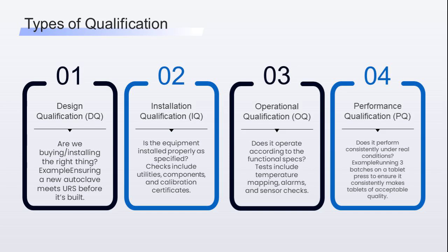OQ, operational qualification: does it operate according to the functional specs? Tests include temperature mapping, alarms, sensor speed, pressure, and RPM settings. PQ, performance qualification: does it perform consistently under real conditions? For example, running three batches on a tablet press to prove it consistently makes tablets of acceptable quality.